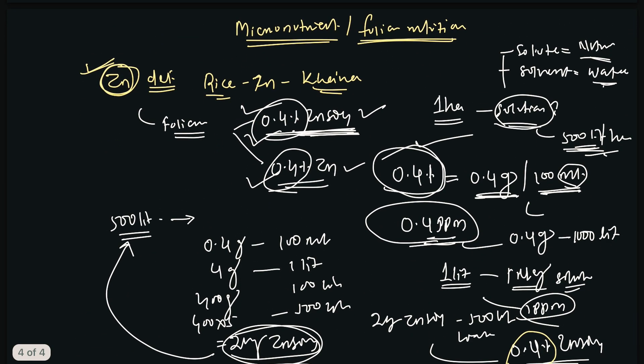So likewise you have to apply or spray on the canopy to reduce or correct your micronutrient deficiency. I hope you understood the numerical. If you have any doubts, you can ask in the comment section, and if you have any doubt from any part of agronomy, you can ask in the comment section as well.